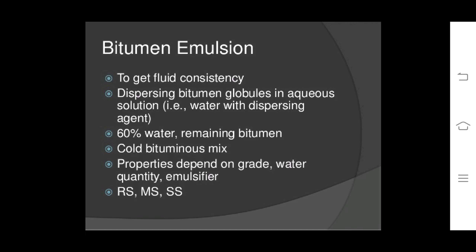Bitumen emulsion: to get fluid consistency, bitumen globules are dispersed in an aqueous solution — i.e., water — with dispersing agents. It contains about 60% bitumen and the remaining is water with emulsifiers. Properties depend on grades, water quantity, and emulsifiers.